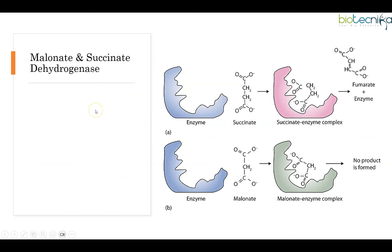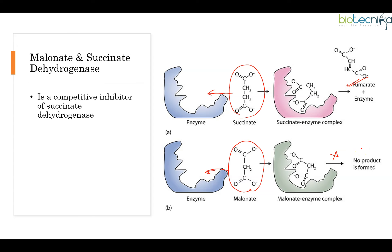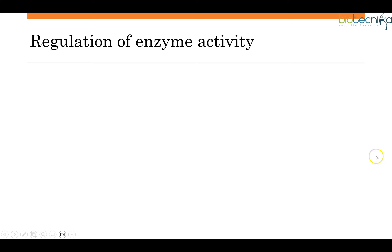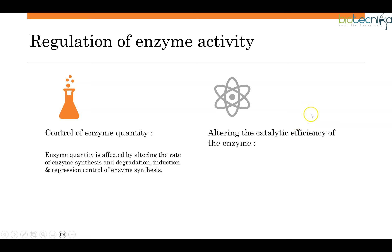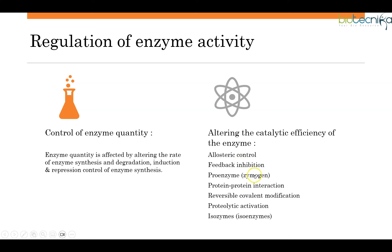An example of a competitive inhibitor is malonate with succinate dehydrogenase — they have mostly similar structures. If succinate binds, you get fumarate as product; if malonate binds, the enzyme is competitively inhibited. Regulation of enzyme activity can be achieved by controlling the amount of enzyme synthesized — altering the rate of enzyme synthesis and degradation via induction and repression control. Or we can alter the catalytic efficiency of the enzyme through allosteric control, feedback inhibition, pro-enzyme activation, protein-protein interaction, or covalent modifications like phosphorylation or proteolytic activation.